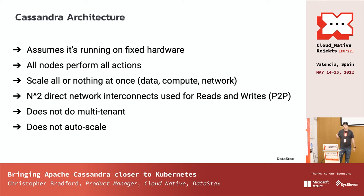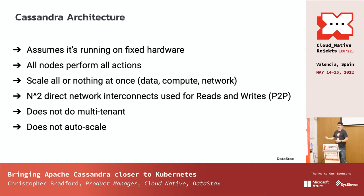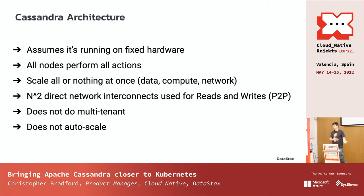At its core, Cassandra assumes it's running on a fixed group of hardware. You can add and remove nodes — nodes will go down, nodes will come up — but there's a bit of a process involved to do that, so for the most part at any given time your Cassandra cluster is running on a fixed set of hardware. All nodes can do all things; it's peer-to-peer, so there's no primary and replicas. You can ask any node to service a query, and if it can't service that query it'll pass it along to a node that can.